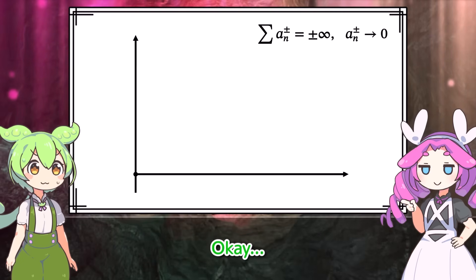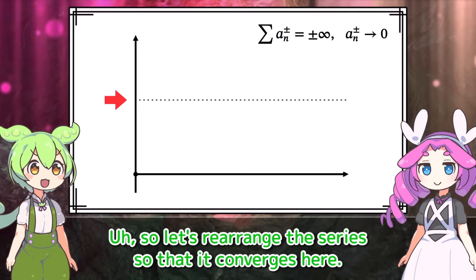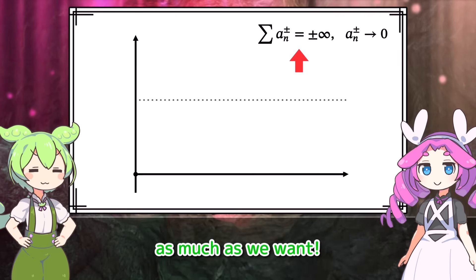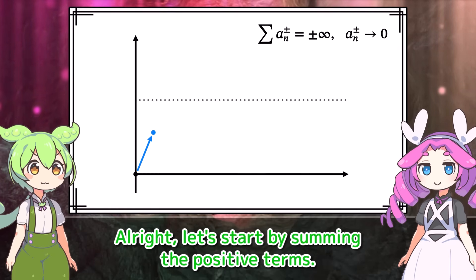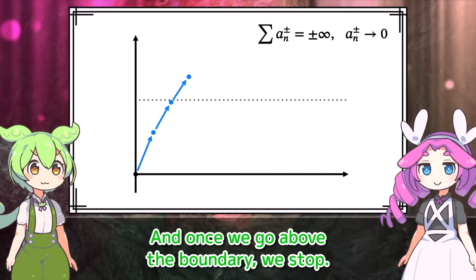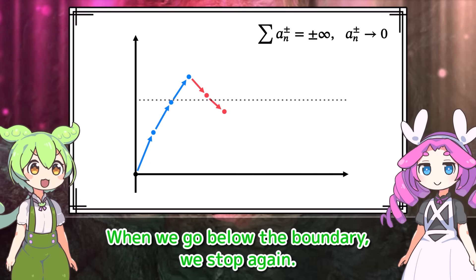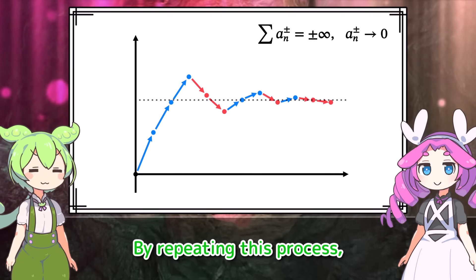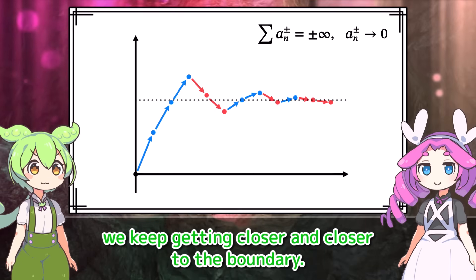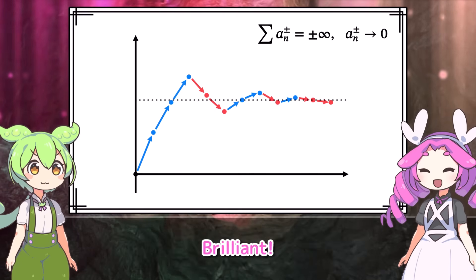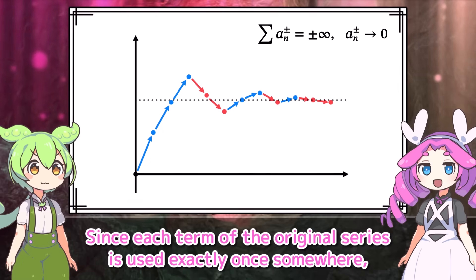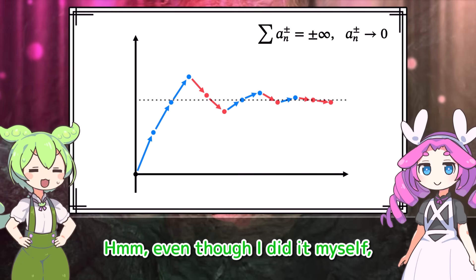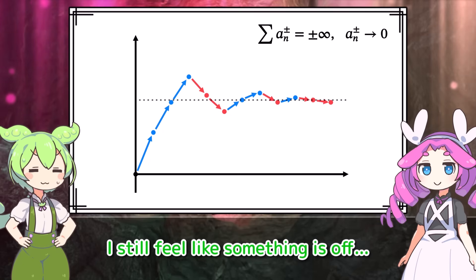Let's finish this. We rearrange this series so that it converges to a desired value beta. We start by summing positive terms, and once we go above the boundary we stop. Then we add negative terms, and when we go below the boundary we stop again. Then we add more positive terms. By repeating this process, since both positive and negative terms tend to zero, we keep getting closer and closer to the boundary. Since each term of the original series is used exactly once somewhere, we are indeed able to make the series converge to any desired value by rearranging it.